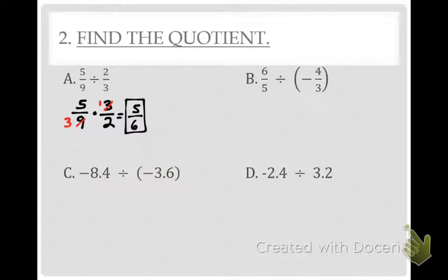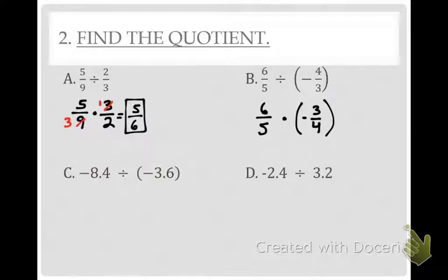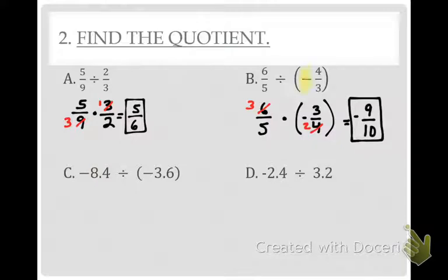Nikki, bump it off and get someone to do problem B. Cameron — let's do the KFC method. Keep the first one, flip the second one — it becomes negative 3 fourths — and change the operation to multiply. Cross-reduce 6 and 4 by 2: 6 becomes 3 and 4 becomes 2. Multiply across to get 9 tenths. Is the answer positive or negative? Negative — because there is only one negative in the original problem, and that's an odd number, so our answer has to be negative.